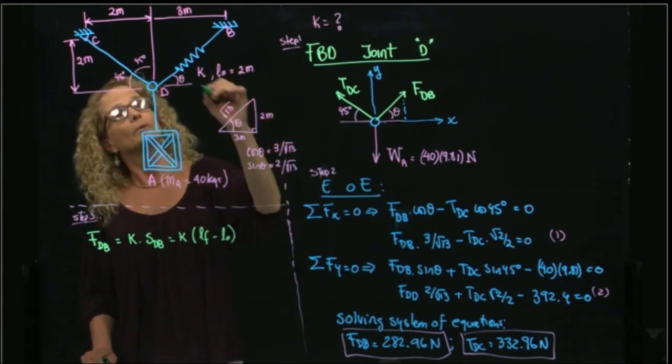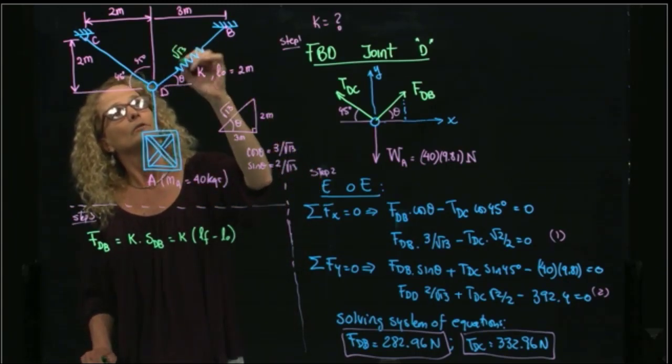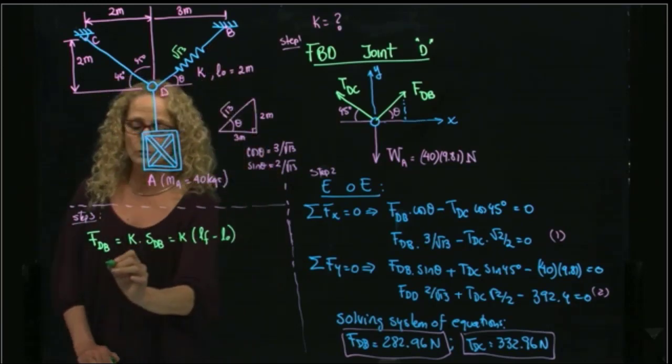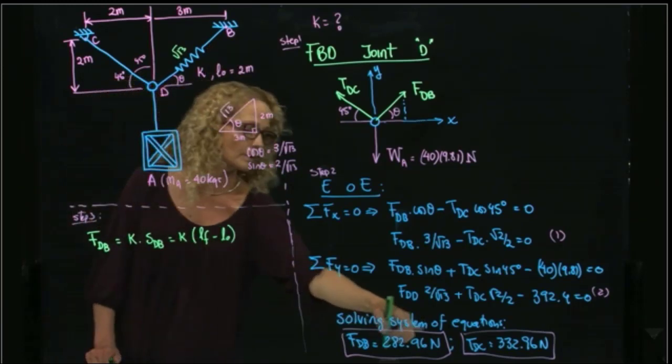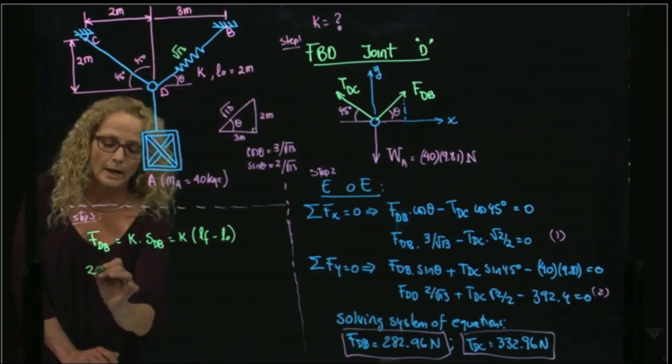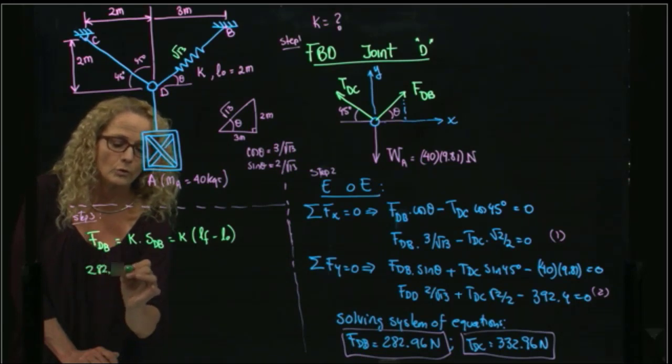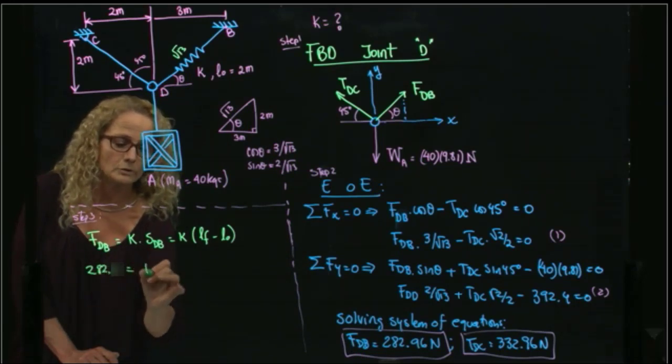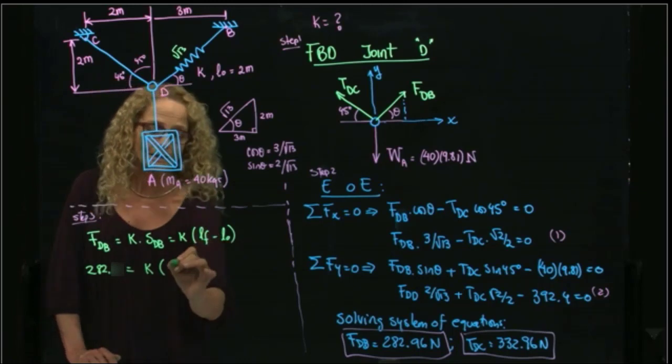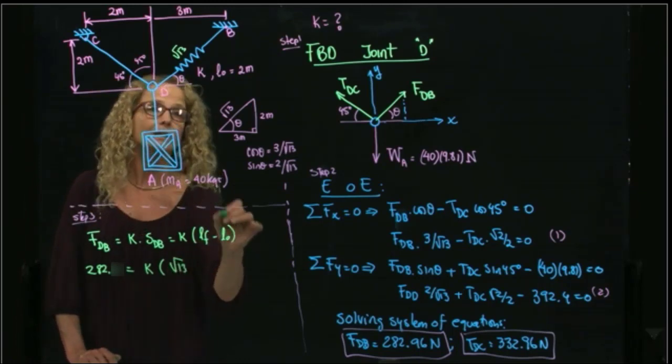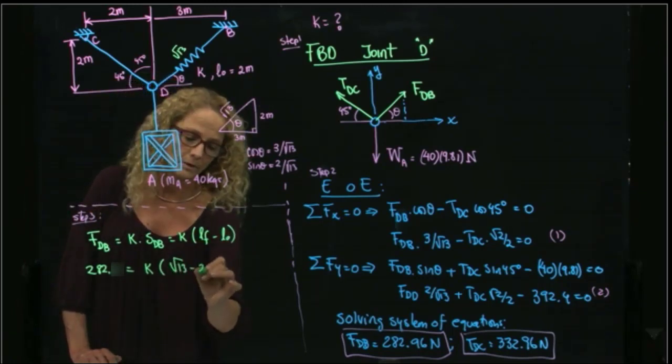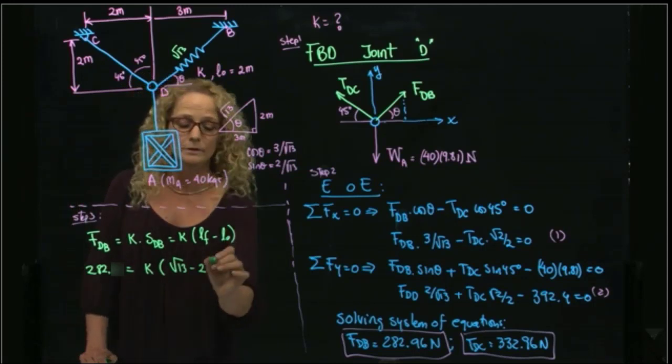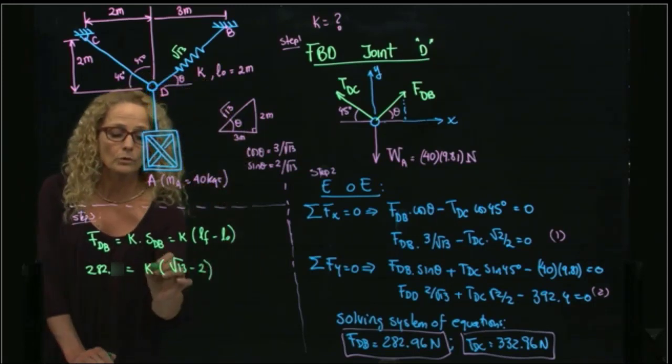The final length, I already know that this is square root of 13, so I know that the force of the spring, which I already found, which is 282.96, will be equals to k. The final length is square root of 13, and the initial length is given, which is the unstretched length of the spring. So the only unknown is k.